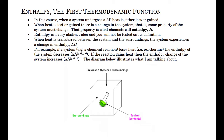Enthalpy is a property of our system. We talked about heat being transferred from a system or into a system. If a system loses heat — if heat is released from that system — we say that's an exothermic process. Enthalpy is a property of the system that changes when heat is released. It's a pretty abstract idea, so don't get too worried about understanding it fully.